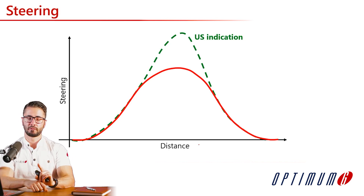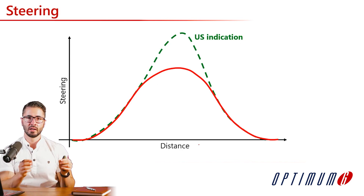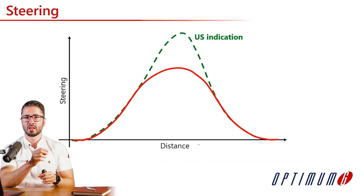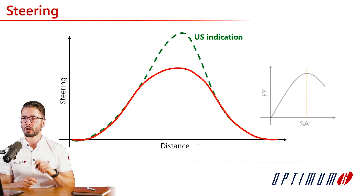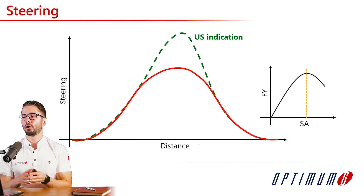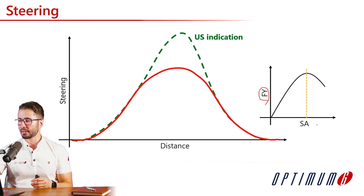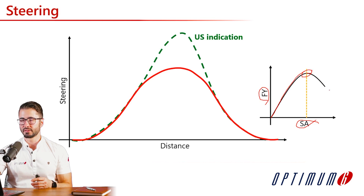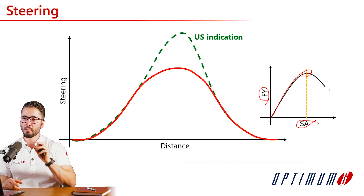Very good drivers, even with an understeered car, won't steer much more than the peak of the tire — we're talking about lateral force versus slip angle. As you steer the tire, grip increases up to a peak. If the car is understeered and the driver steers past this peak, it doesn't help find extra grip — it actually decreases grip. A small amount of front axle sliding is acceptable so the driver can feel the tire's peak.